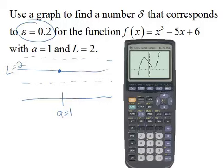We'll go ahead and put in this function and graph it. We can see that it is an x cubed, so we expect the graph to look something like this. Now because we're interested in values around x equal 1 and y equal 2, let's go ahead and set our window.